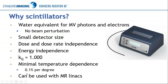So, without further ado, why scintillators? I get that question a lot when we first talk about them. Why would you use a scintillator? The main motivating factor is that these are water equivalent for MV photons and for electrons. The real advantage of this, particularly for small field dosimetry, is that you're not perturbing your beam right at the point of measurement. And so you don't have a whole list of field size or energy dependent correction factors to apply to your measurement in order to get back to that dose to water.